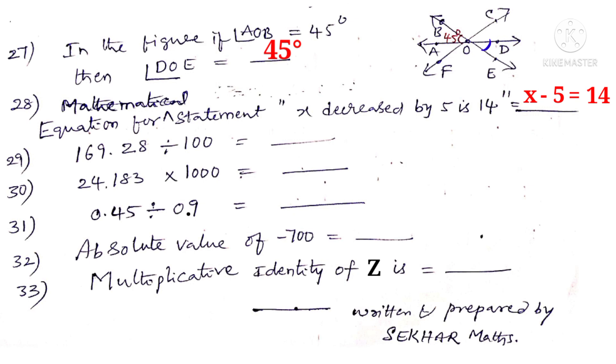Now 29th bit. 169.28 divided by 100. Observe that there are two zeros in the denominator. So the decimal point should shift left side after two digits. So 1.6928. Now 30 bit. 24.183 into 1000. Observe that there are three zeros in the multiplicand. So the decimal point should shift right side after three digits. So it becomes 24183.